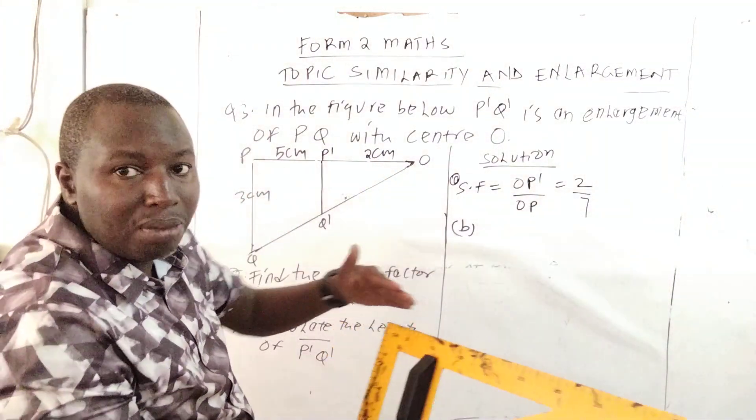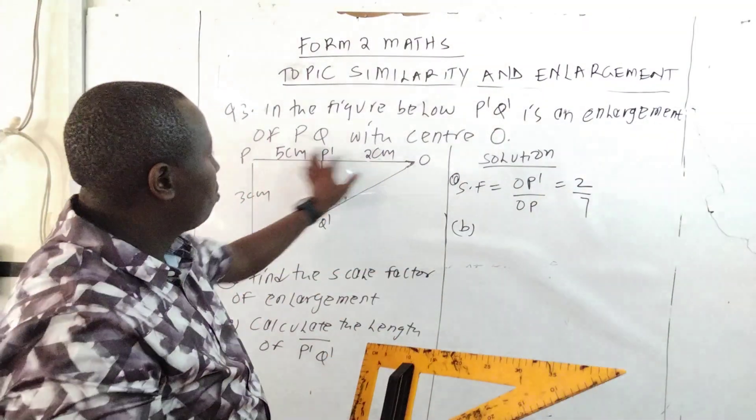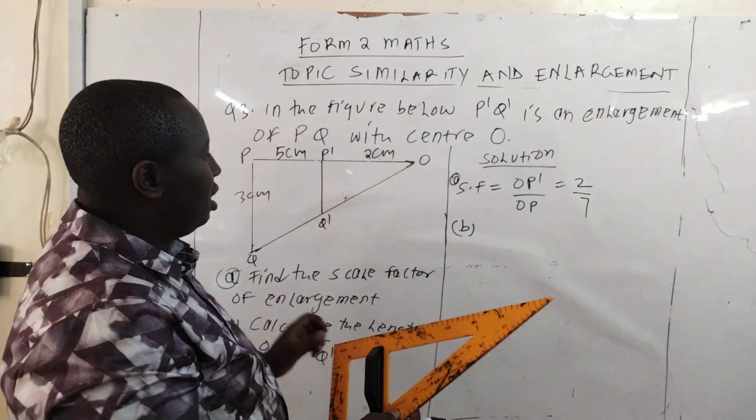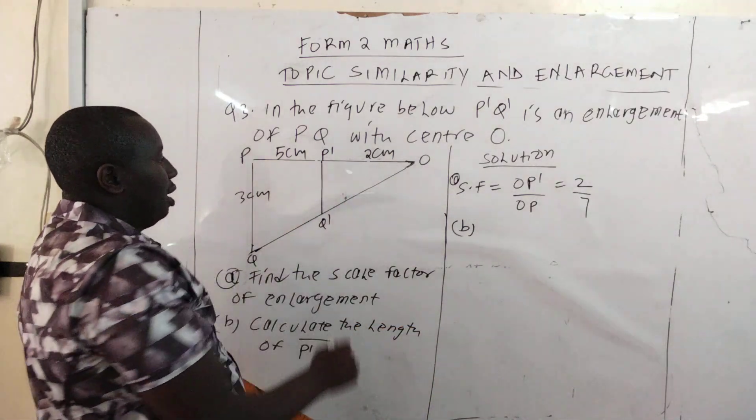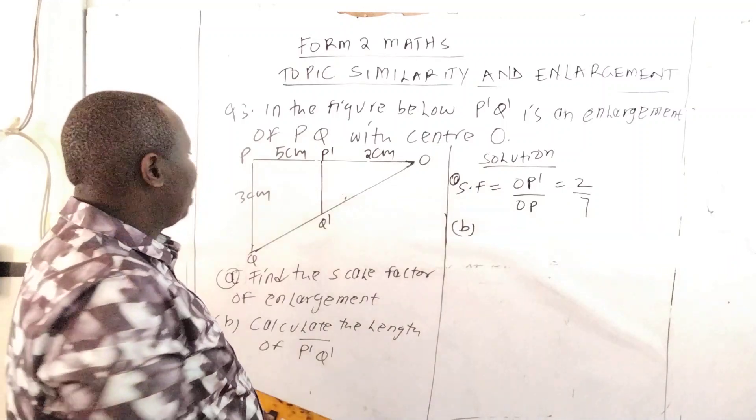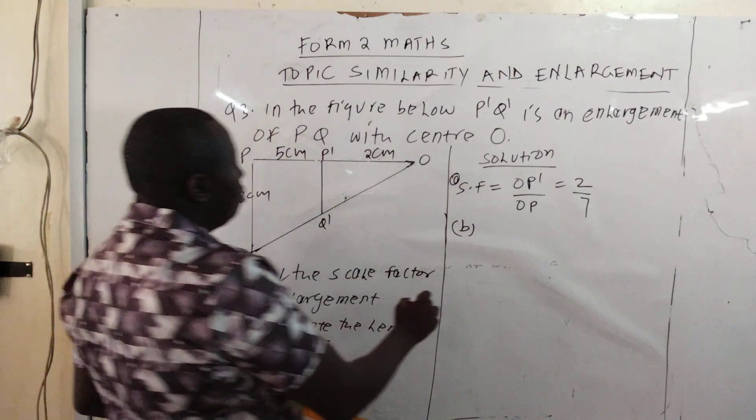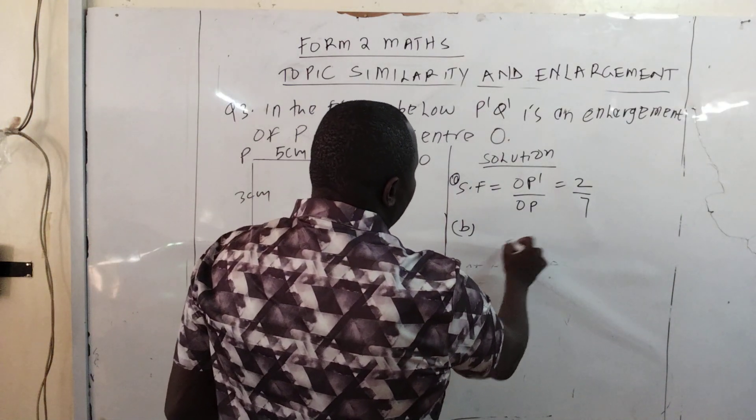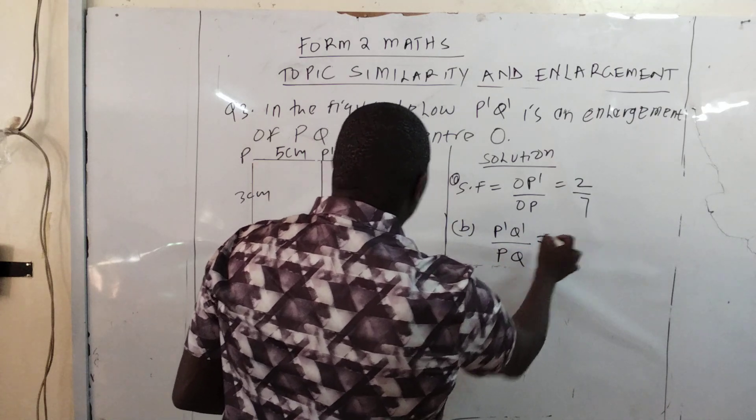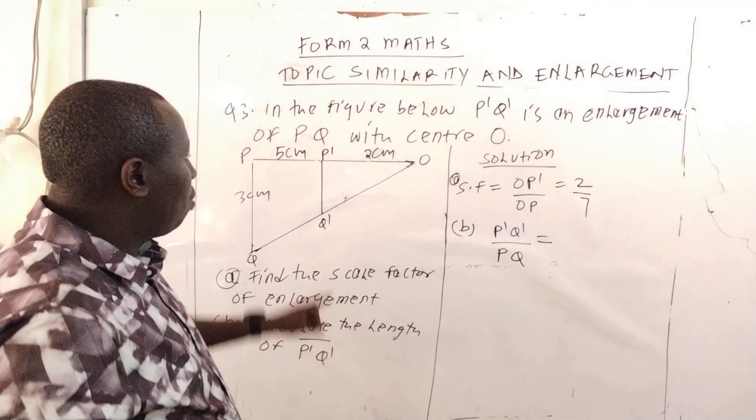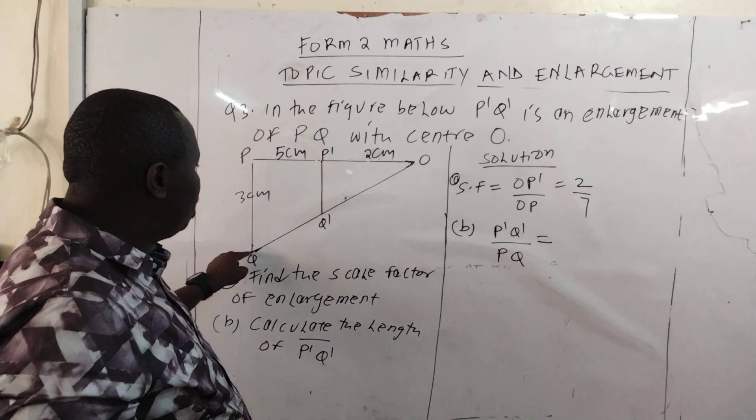To find the length of P1Q1, you use the scale factor again. P1Q1 over PQ equals the scale factor. So P1Q1 over PQ, you take this as 2 over 7.